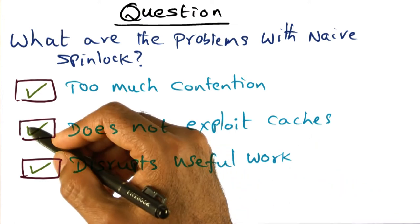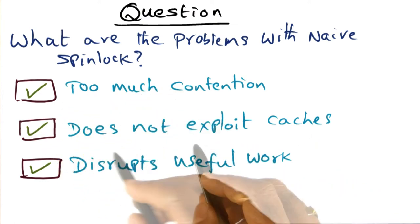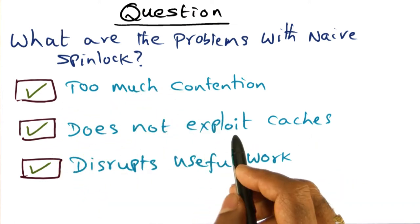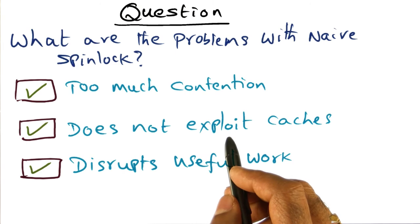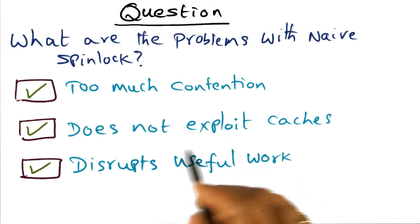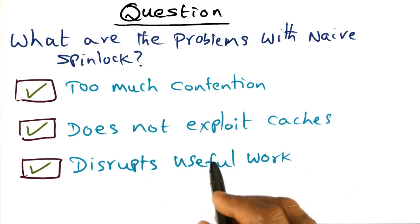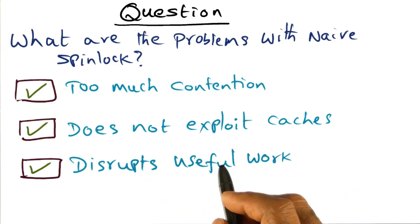And therefore, yes, this is also true: the spin algorithm — spin on test-and-set — is not going to be able to exploit the caches.